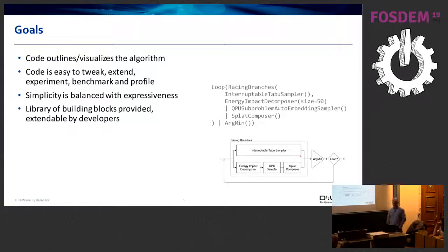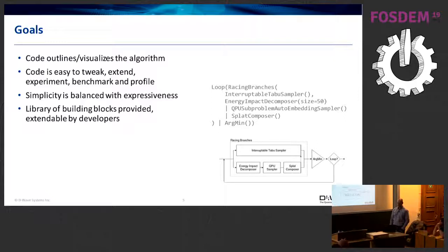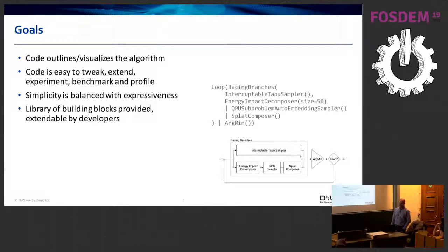The idea is to visually outline the algorithm so code is easy to tweak — you can easily tweak parameters, easily tweak structure, and also extend it by creating your own blocks. Benchmarking and profiling are core features; we profile by default. On the other hand, we wanted to balance simplicity with expressiveness, so this is not as general as it could be — you cannot build a general graph or a TensorFlow-kind of model with this, because we wanted to stick to functionality usually required by decomposition algorithms. We wanted to provide a library of such building blocks that are understood and easily extendable by developers.